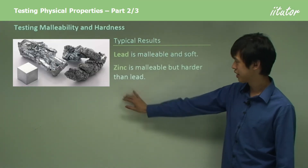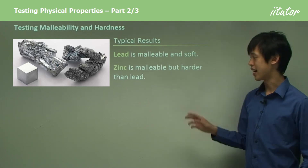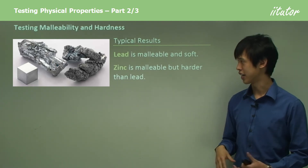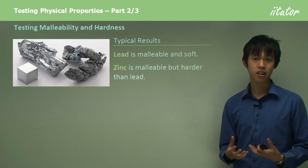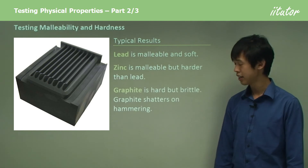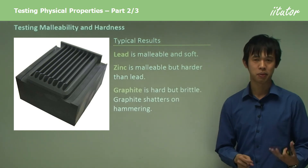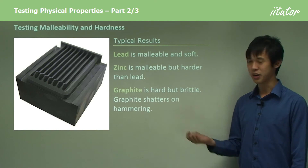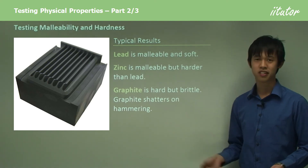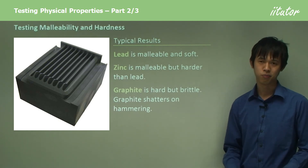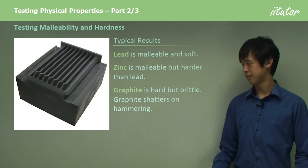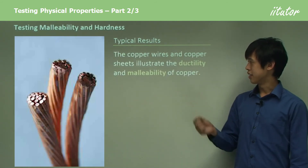Zinc is malleable but it's harder than lead, so it's harder to beat into the correct shape. Lead is really soft, but zinc is a lot harder — though still malleable. Now graphite: if you've ever snapped a pencil in half out of frustration, you'll notice that graphite is pretty brittle. If you were to hit a graphite rod it will shatter, so it doesn't do well with stress — it just shatters.